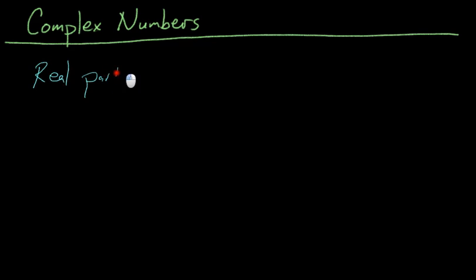It has a real part, which is just a regular number, like 1, 2, pi, negative 3.4, negative 10 over whatever.